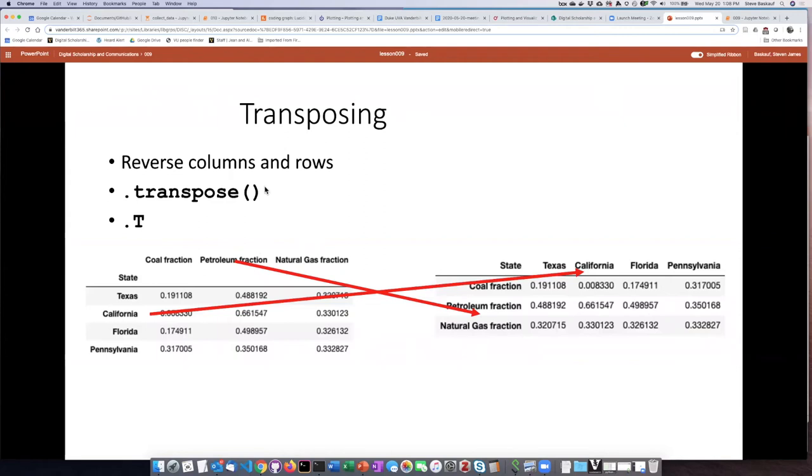There are actually two methods that we can use. There's the unabbreviated version of the method, which is .transpose(), and then you just put in empty parentheses.